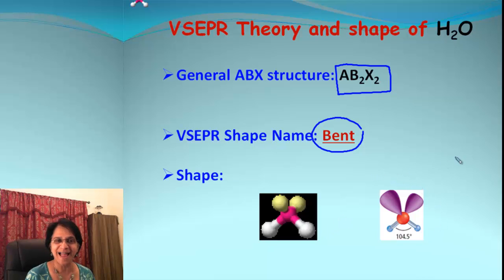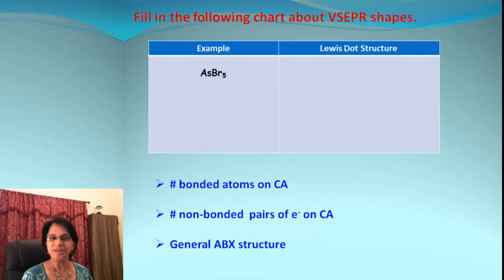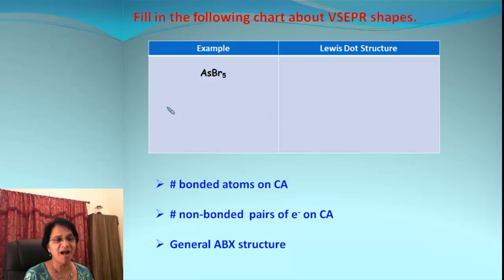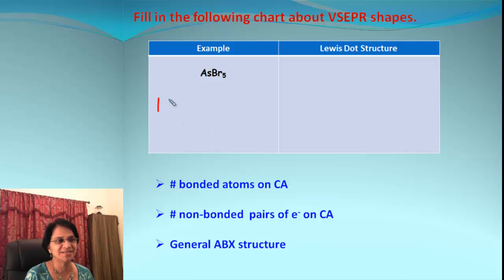For the ABX structure AB2X2, the VSEPR shape is bent. So water is a bent molecule, and this is the 3D picture for it.